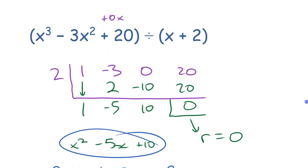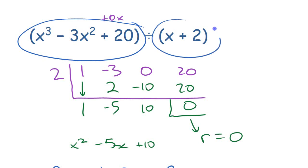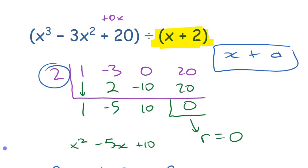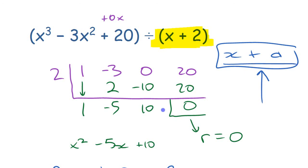That's synthetic division — a much quicker way to find your quotient and remainder when dividing polynomials. One important note: while long division works with any polynomial divided by any other polynomial, synthetic division only works when you're dividing by a binomial of the form x plus some number. If you had a leading coefficient or more than two terms in the divisor, it won't work as neatly. But for dividing by a simple binomial — which is common — synthetic division saves a lot of time.